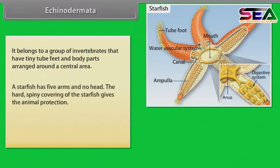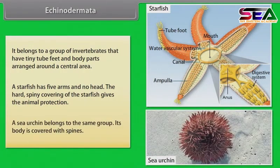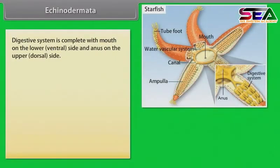A starfish has five arms and no head. The hard spiny covering of the starfish gives the animal protection. A sea urchin belongs to the same group and its body is covered with spines. The digestive system is complete, with the mouth on the lower ventral side and the anus on the upper dorsal side.